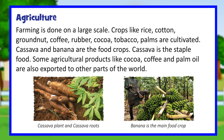Farming is done on a large scale. Crops like rice, cotton, groundnut, coffee, rubber, cocoa, tobacco, and palms are cultivated. Cassava and banana are the food crops, and cassava is the staple food. Some agricultural products like cocoa, coffee and palm oil are also exported to other parts of the world.